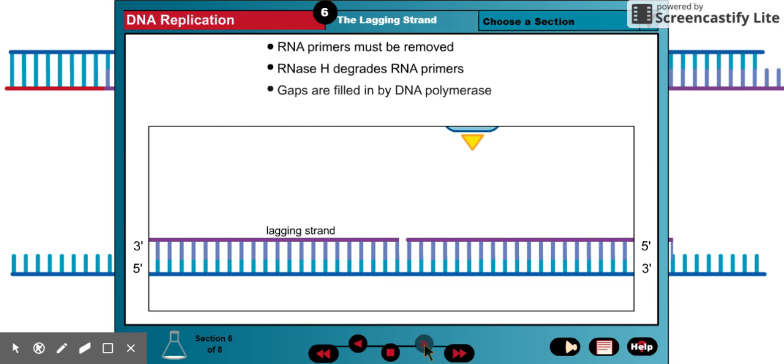Finally, the Okazaki fragments are joined together by DNA ligase, which hooks together the 3' end of one fragment to the 5' phosphate group of the neighboring fragment in an ATP or NAD-dependent reaction.